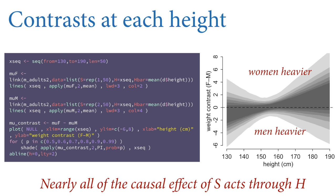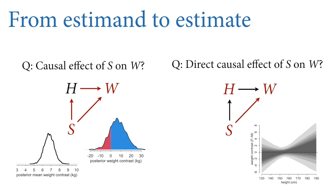We observe big mean differences in weight by sex in this population, but that's because men are taller. We've now got both estimates: the total causal effect on the left and the direct causal effect on the right, which is almost nothing. There's almost no direct effect of sex on weight in this population.